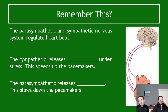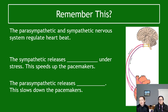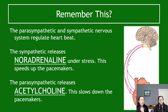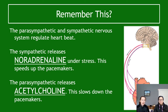This also links back to what you learned about controlling heart rate. Think about which neurotransmitter each branch releases. The sympathetic nervous system releases noradrenaline — think of adrenaline junkies getting a rush, which connects to the fight-or-flight response. The parasympathetic nervous system releases acetylcholine, which slows down the pacemaker cells in the heart. If you can remember one, you can remember the other is the opposite.